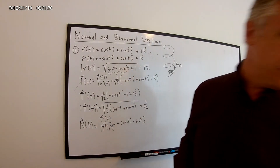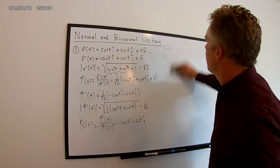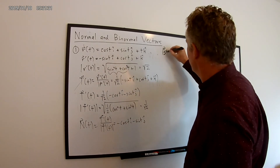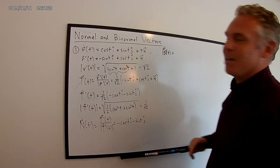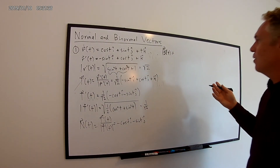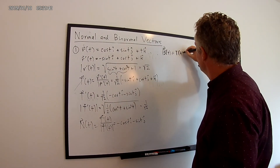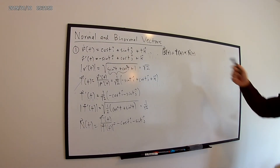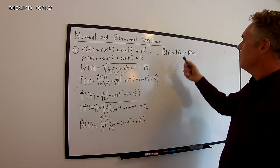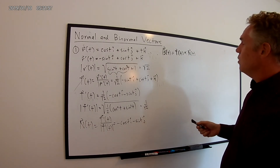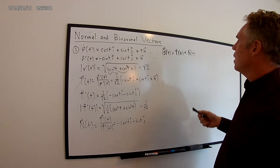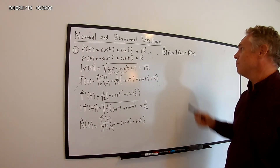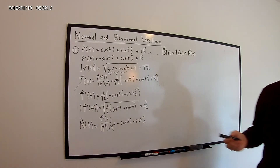As a final part of this problem, let's find the binormal vector. The binormal vector B(t) = T(t) × N(t) — the cross product of the unit tangent vector with the unit normal vector. This gives a vector perpendicular to both. The magnitude of the binormal vector is 1, since both T and N have magnitude 1.